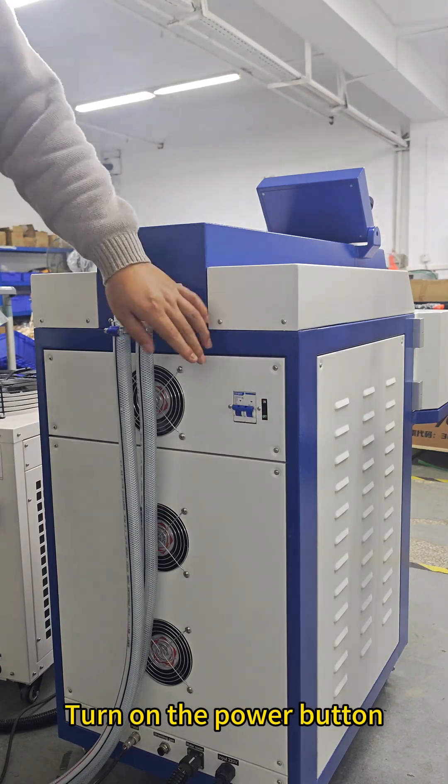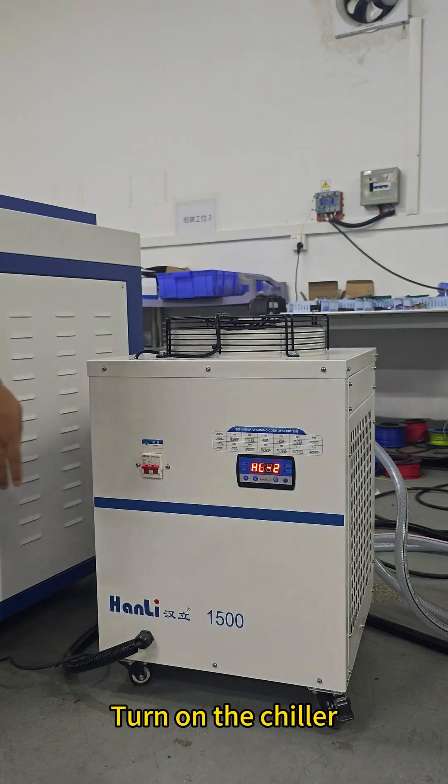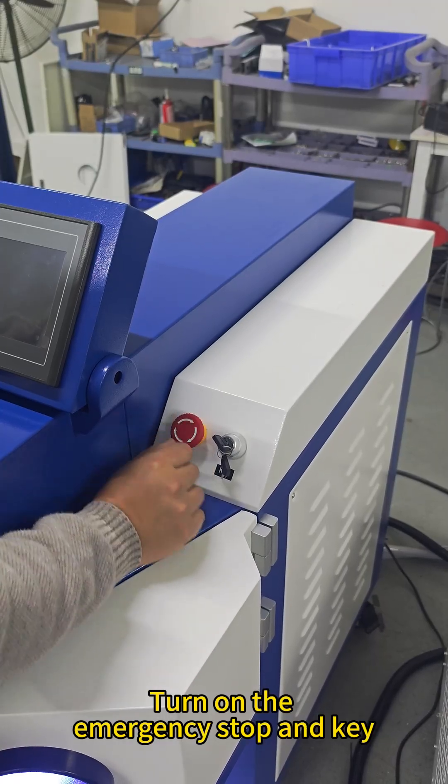Turn on the power button. Turn on the chiller. Turn on the emergency stop and key.